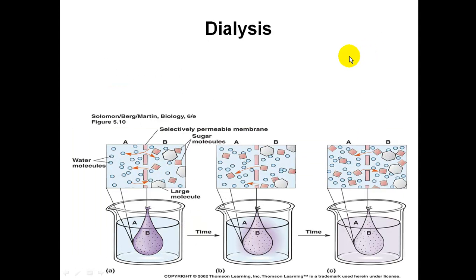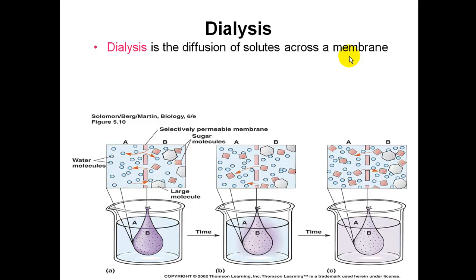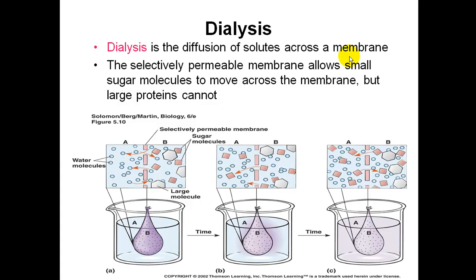Another related process is dialysis — the diffusion of solutes, where solutes move across a membrane instead of water. A selectively permeable membrane will allow small sugar molecules to move across but large proteins cannot. Here is an example over time showing the movement of molecules, where sugar molecules are the rectangles and water molecules are the circles.